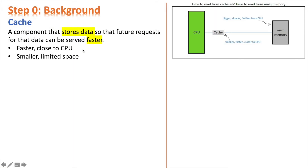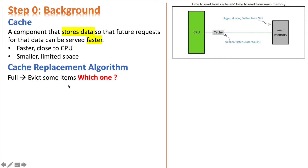First, what is a cache? A cache is a component that stores data so that future requests for that data could be served faster. Cache is closer to the CPU compared to main memory, which is why reading from cache is much faster. It also has smaller space, so the limited space could be easily filled up. When new data comes in, we have to get rid of something first — but which one should we remove? There are some algorithms to solve this, called cache replacement algorithms, and LRU is one of them.